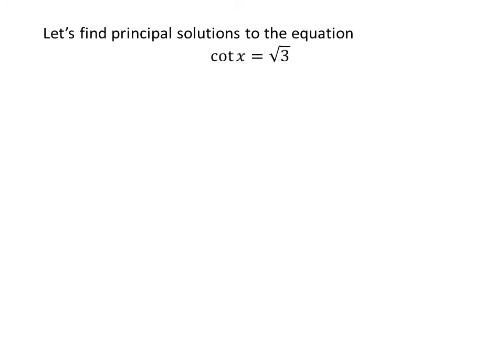Let us first find the principal solutions to the equation cot x = √3. We know the solutions to the trigonometric equation for which x ≥ 0 and x < 2π are the principal solutions.